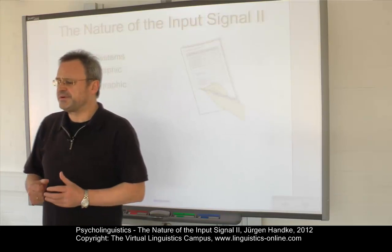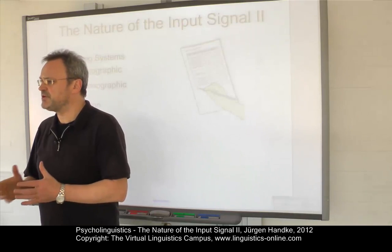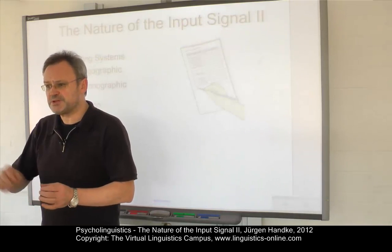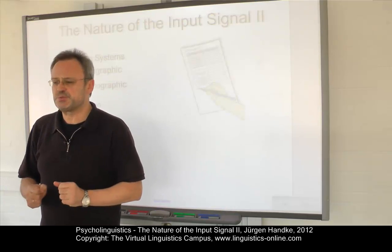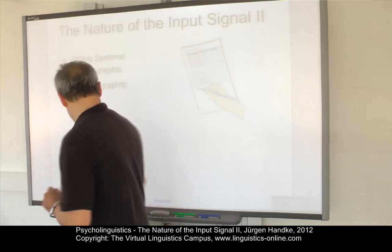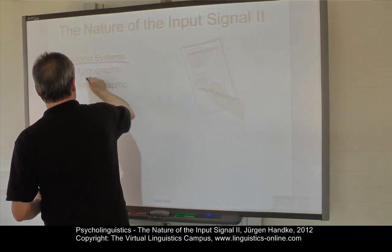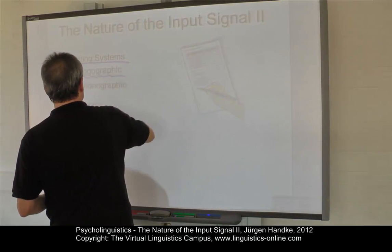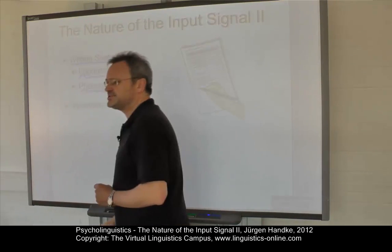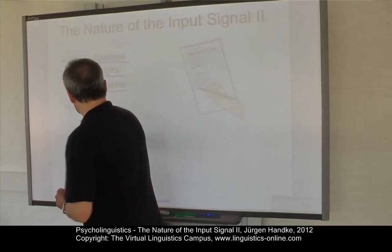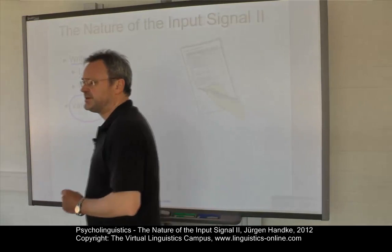In reading, the preliminary analysis of the input signal involves using information from written language. To understand this and other issues, we will first look at the writing systems that we know, in particular the two main branches — logographic and phonographic writing systems — and we'll then concentrate on variation in the written signal.